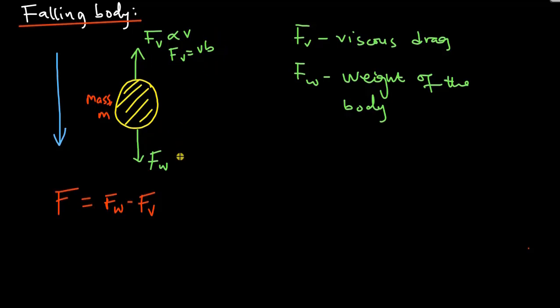We also know that the weight of the body is the mass of the body times the gravitational acceleration. So my equation of motion thus becomes MA, for the force, equals the weight of the object, which is Mg, minus the viscous drag on the body, which is Vb.